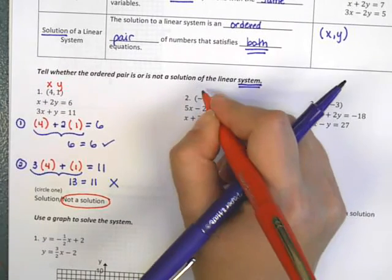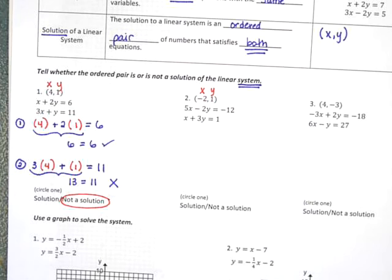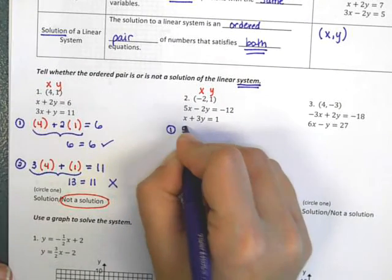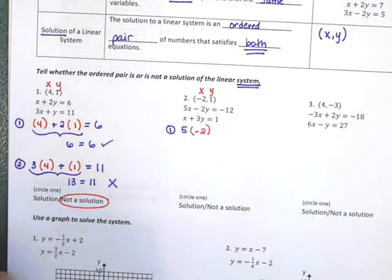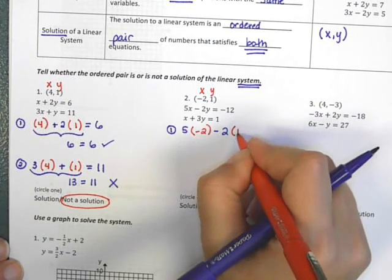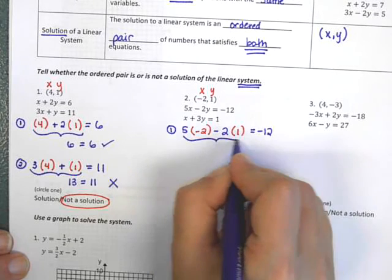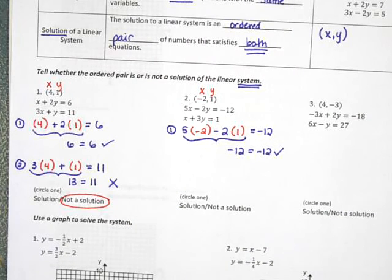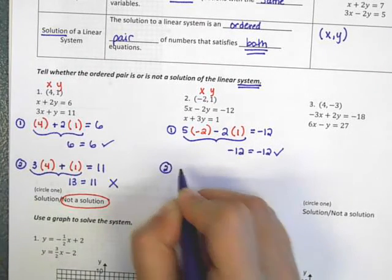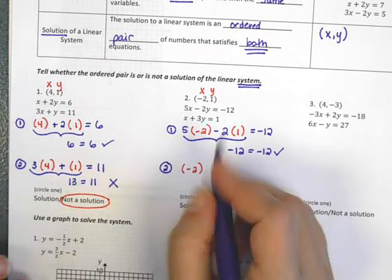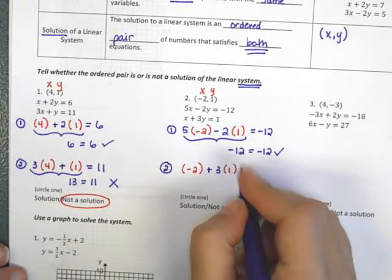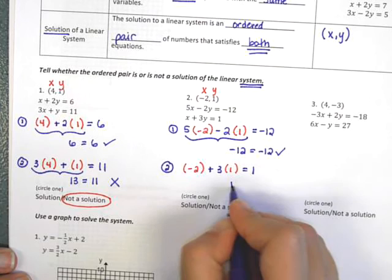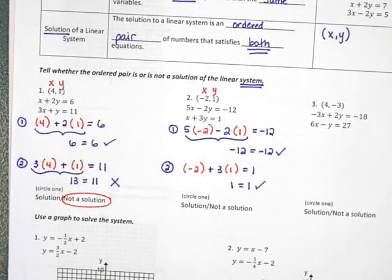Let's try example two. Again, we are checking whether this particular x, y combination will satisfy both equations. First, I'm going to plug x equals negative 2 into the first equation: five times negative two, minus two times one equals negative twelve. That gives negative twelve equals negative twelve, which is true. Then checking the second equation: negative two plus three times one equals one. Negative two plus three is one, equals one, which is also true. The ordered pair worked for both equations, so we would say it is a solution of the system.